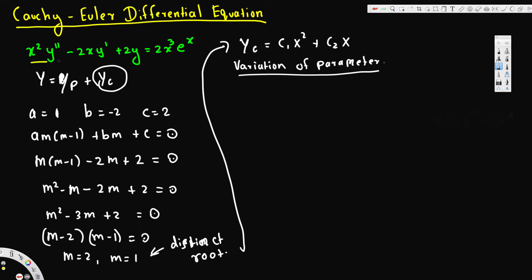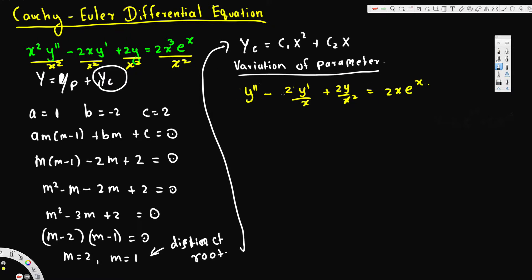To eliminate the x² in front of y″, we divide everything by x². Dividing gives: y″ − (2/x)y′ + (2/x²)y = 2xe^x. Now the equation is in standard form, and g(x) = 2xe^x comes from this standard form — that's why we must divide first before identifying g(x).